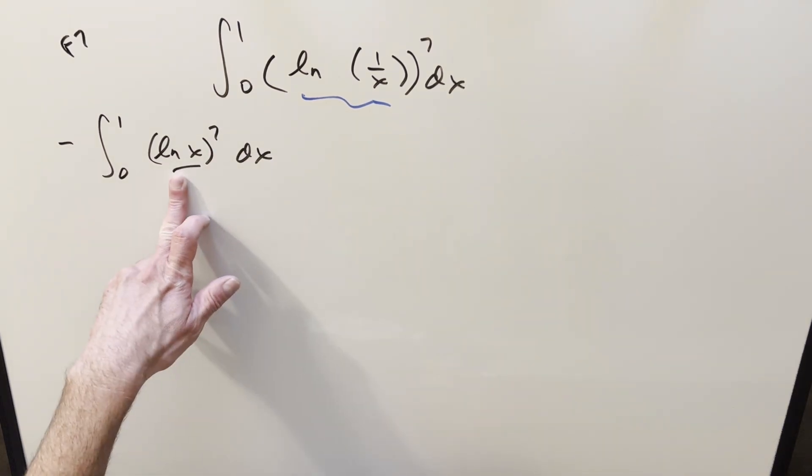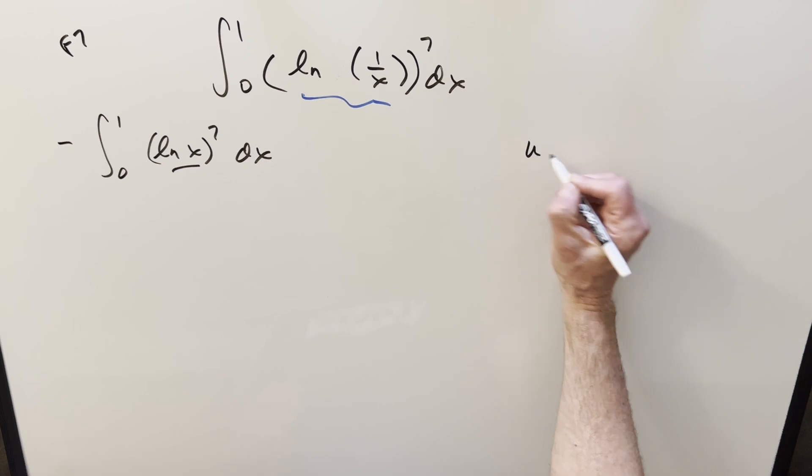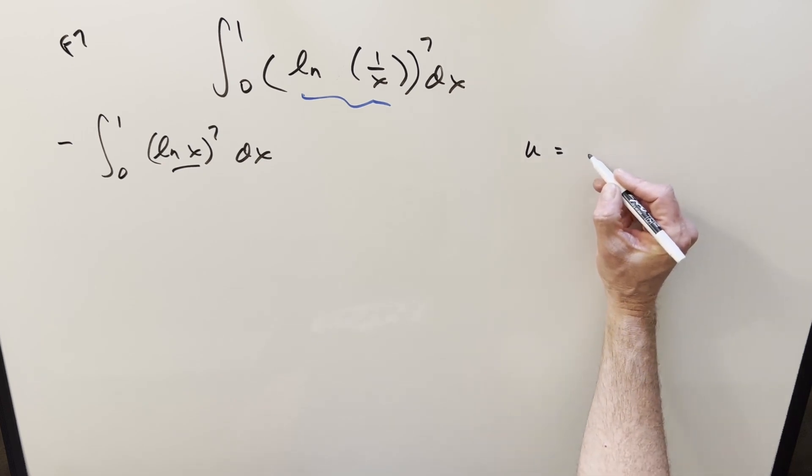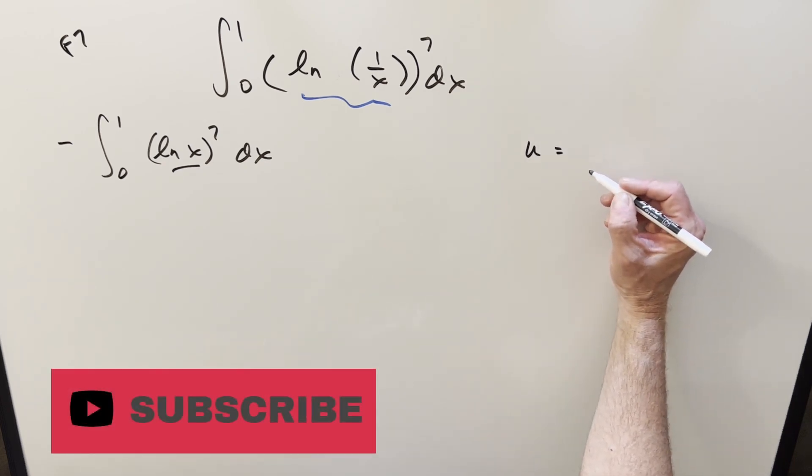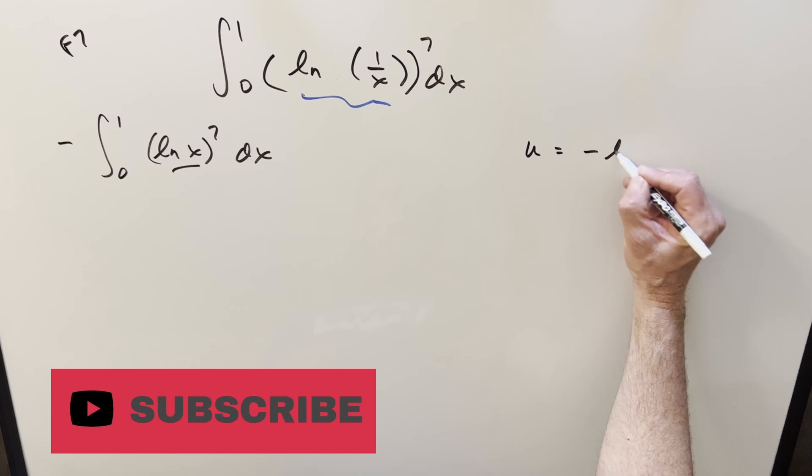And then from here I want to do a substitution. Let's do u. We could do u equals ln(x), but let's do it a little differently. Let's bring that minus sign back in and do u equals minus ln(x).